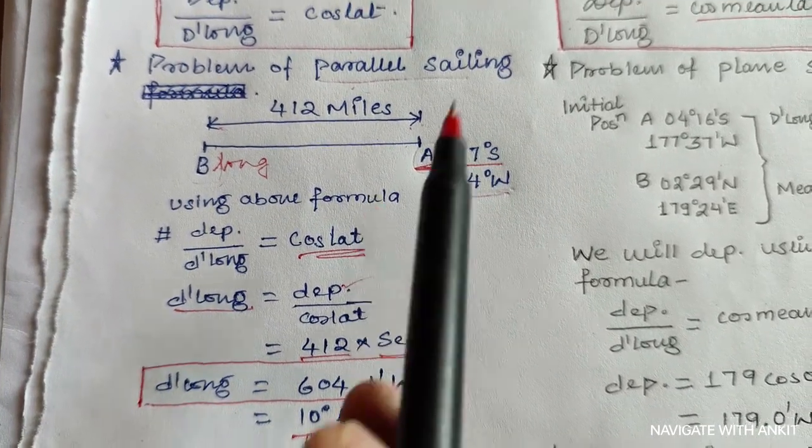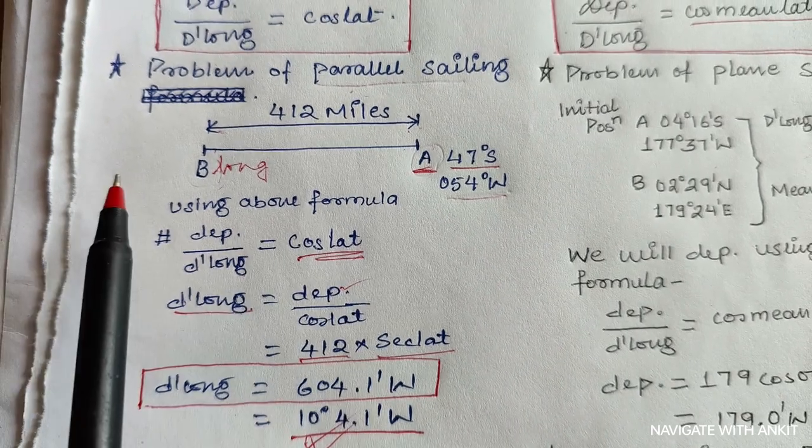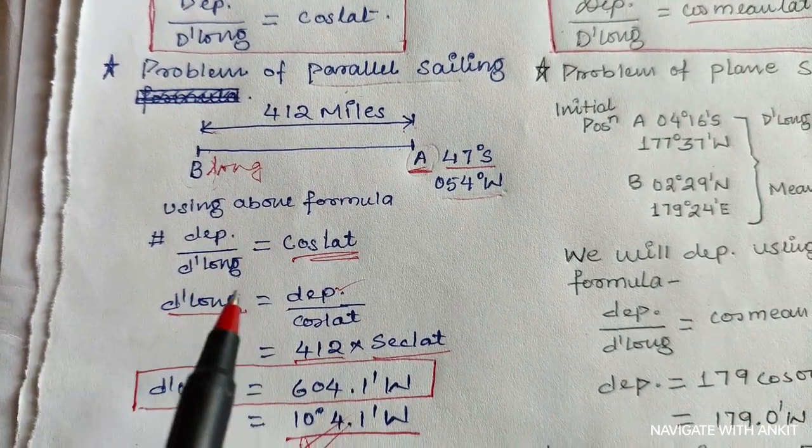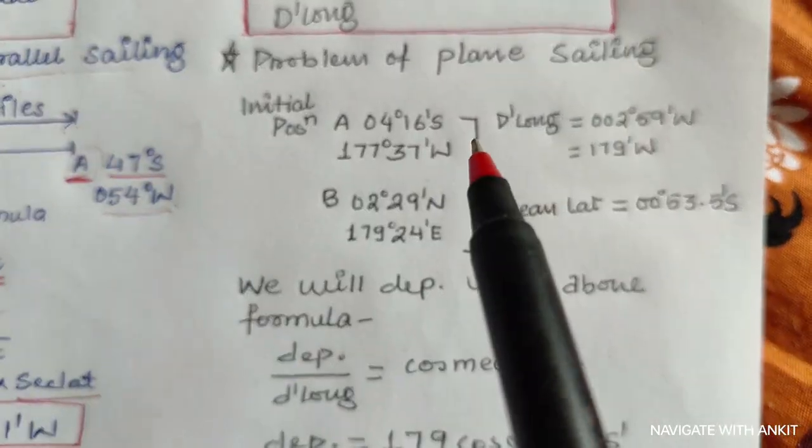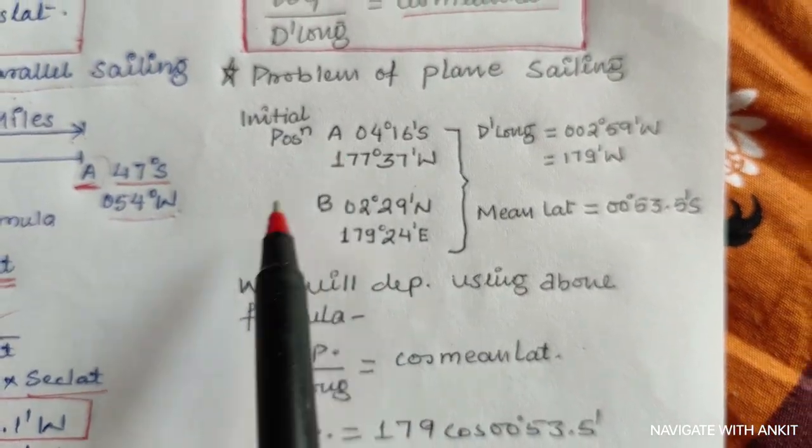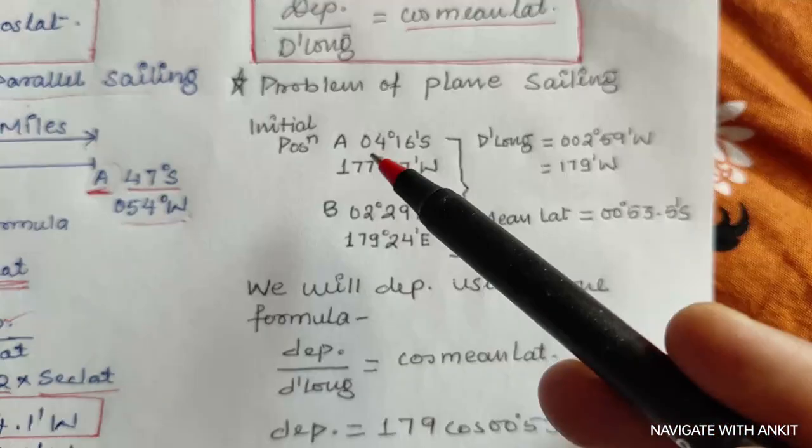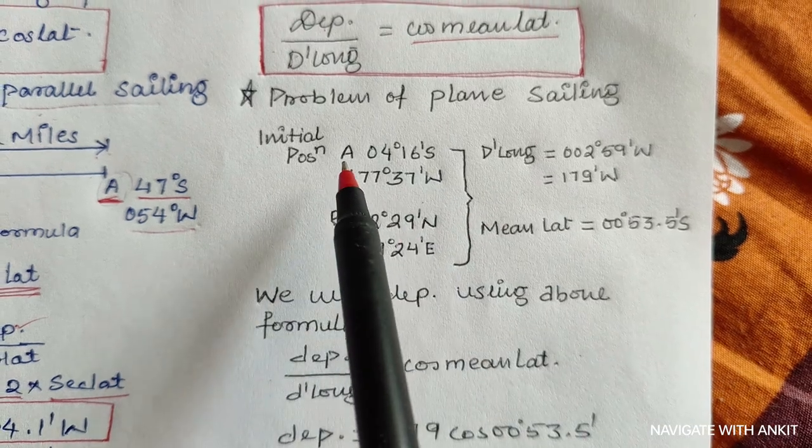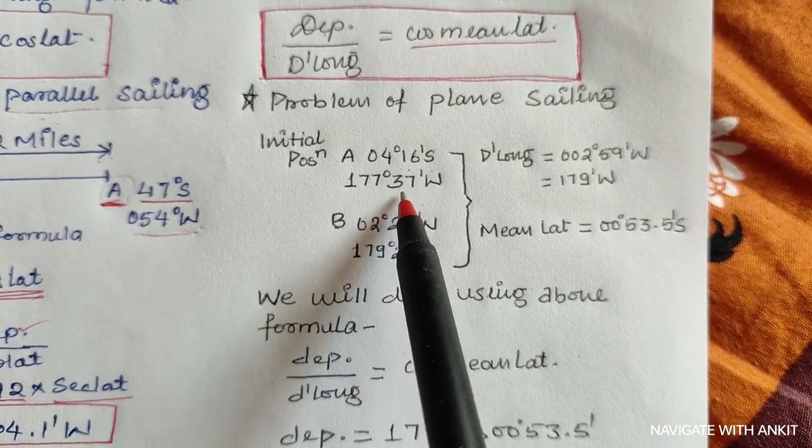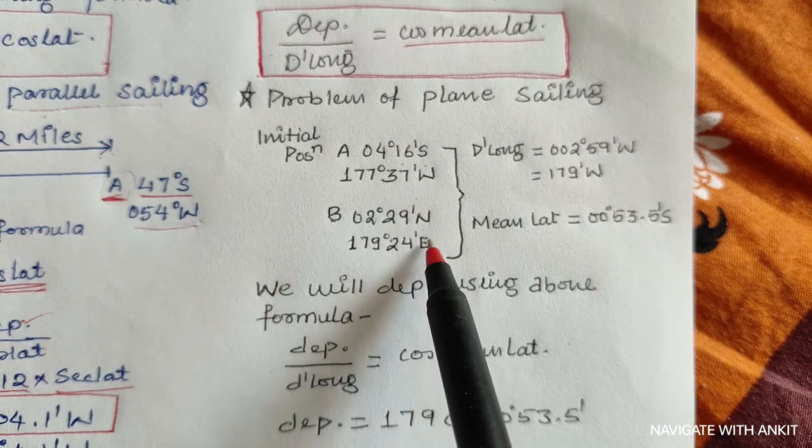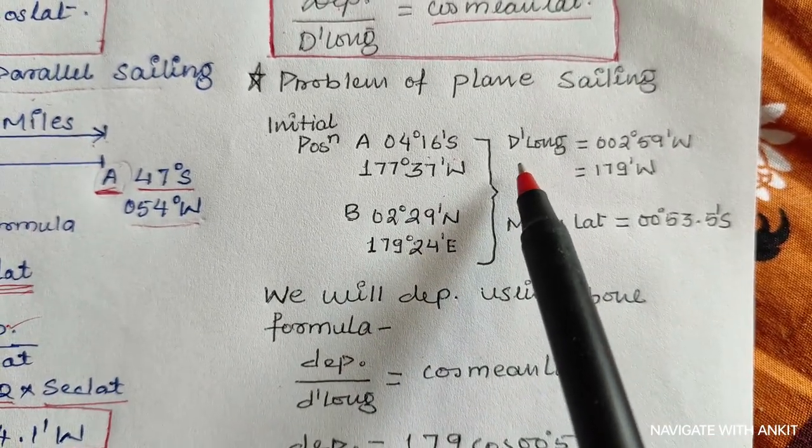So now we will solve a problem related to plane sailing. In this question you can see that position A is 04 degrees 16 minutes south and 177 degrees 37 minutes west, B is this, and from here we will get the D'long.